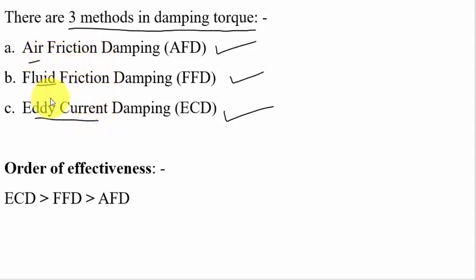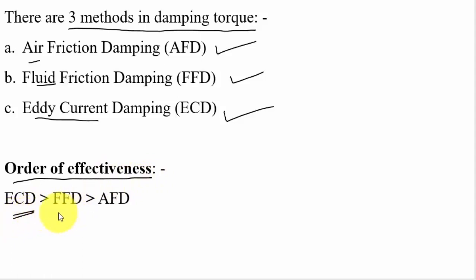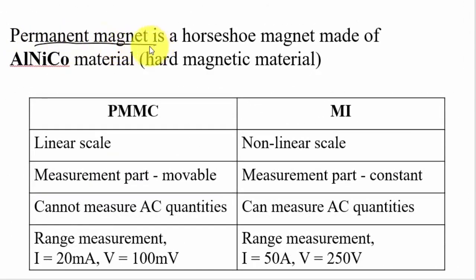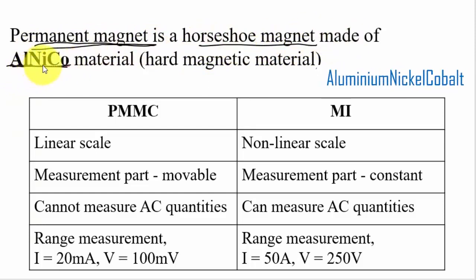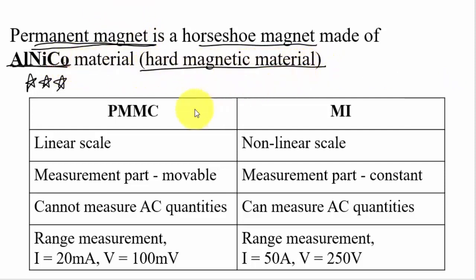If you use oil or viscous elements it is fluid friction damping; if you use a current coil it is eddy current damping. In terms of order of effectiveness, eddy current damping is far better compared to fluid friction damping and air friction damping. Air friction damping offers the least resistance to vibrations. In PMMC, a permanent horseshoe magnet is used, made up of Alnico (aluminum-nickel-cobalt) — a hard magnetic material. This material question is frequently asked in exams.